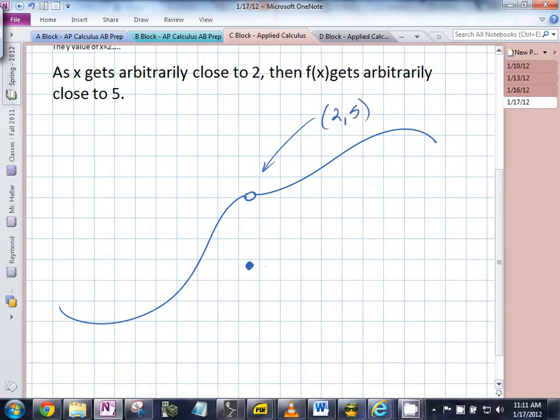There it is. As you're traveling along this line and you get infinitely close to x equals 2, what do you get infinitely close to here? 5. Does it matter what the output is at 2? At an x value of 2, does it matter what the output is? No.